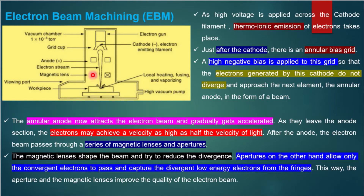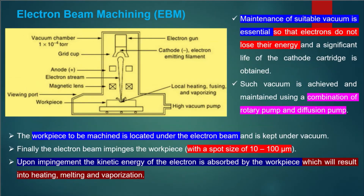Regarding the magnetic lens: electrons are charged particles, so they can be easily deflected by a magnetic field — that is how the magnetic lens works, similar to how a normal optical lens focuses light. To maintain the required vacuum, a combination of rotary and diffusion pump is used. This is the electron beam machine.